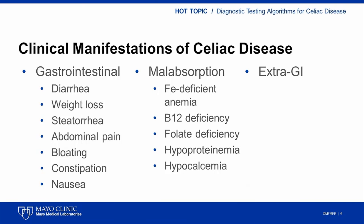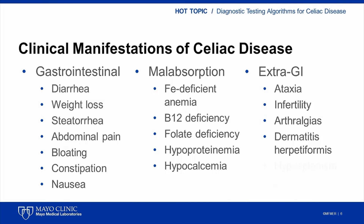Patients with celiac disease may also show manifestations that appear to have little to do with the gastrointestinal system. Reports in the literature have demonstrated associations between celiac disease and ataxia, infertility, arthralgias, dermatitis herpetiformis, hyposplenism, and a variety of autoimmune conditions. The point to stress here is that the symptoms of celiac disease may be nonspecific, sometimes making for a challenging diagnosis.